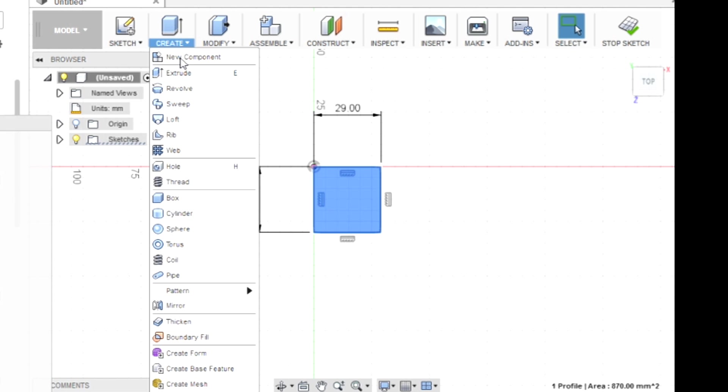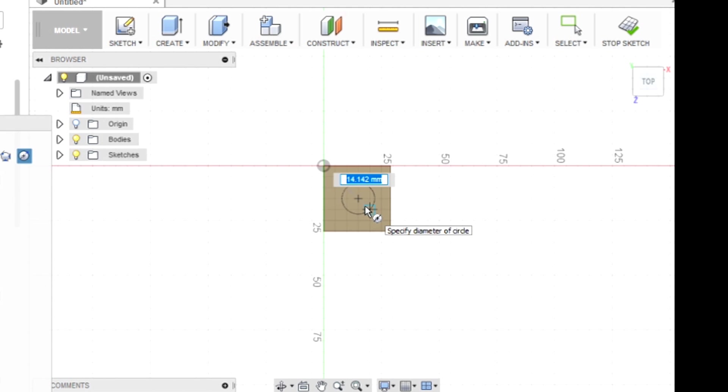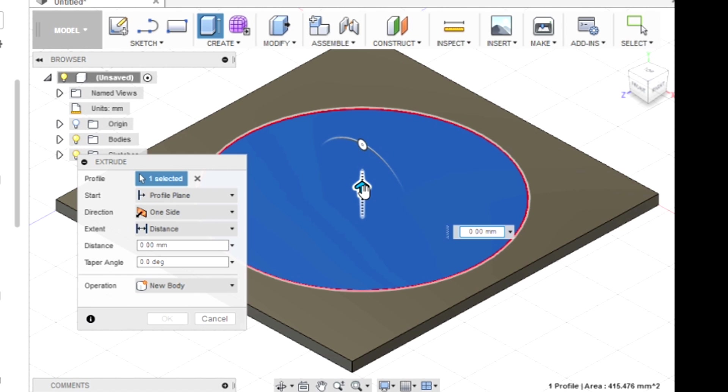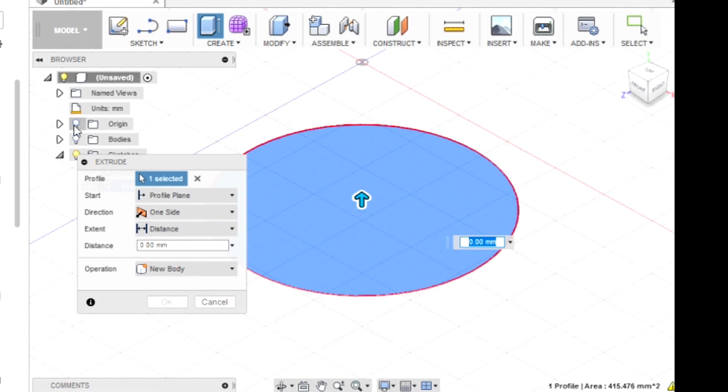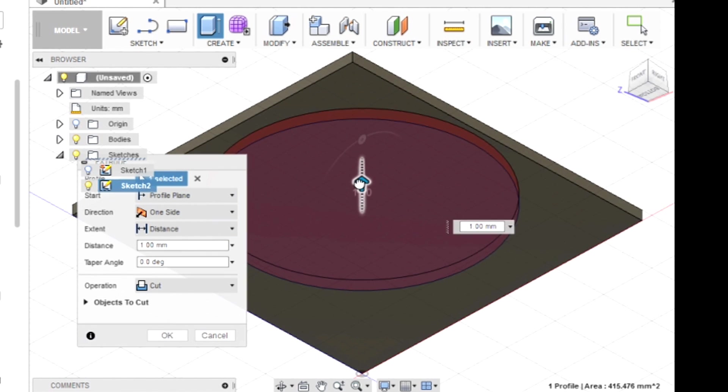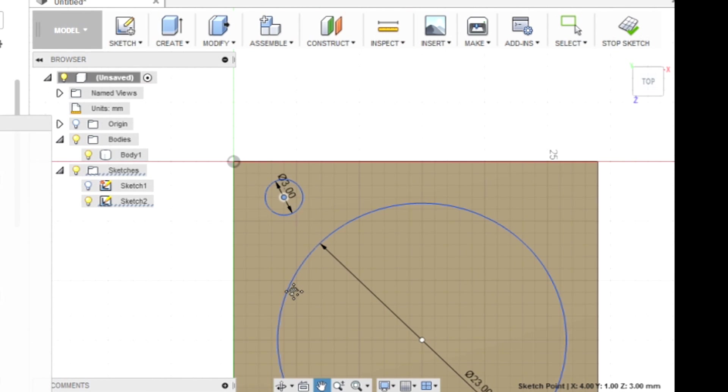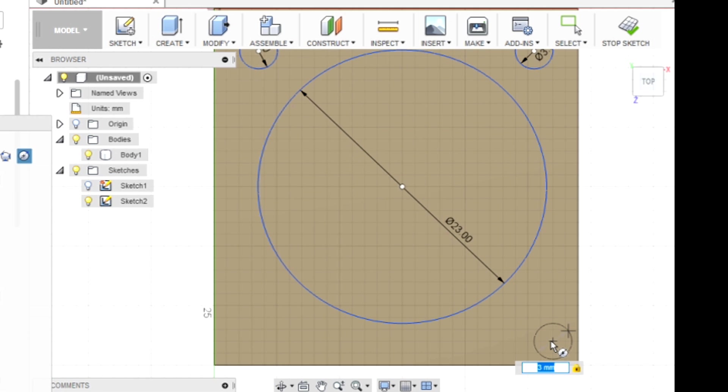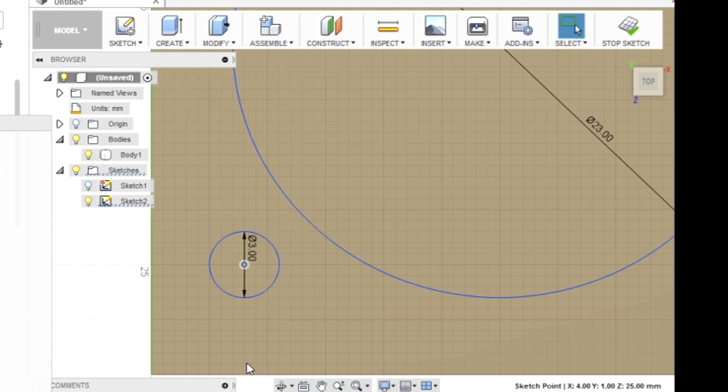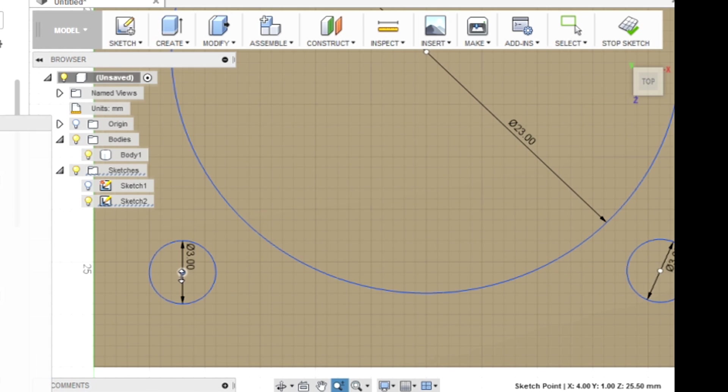Okay, we're going to jump over to Fusion 360 and start designing this carb plate. First thing I'd like to say is my screen capture software and Fusion 360 did not play well together. I think they're just both too resource intensive and they just drown my computer down. The other thing is I am not a Fusion 360 guru. I've never had any formal training with this software or even watched tutorials. The most that I have done is maybe Google certain operations like how to make a hole or things like that.